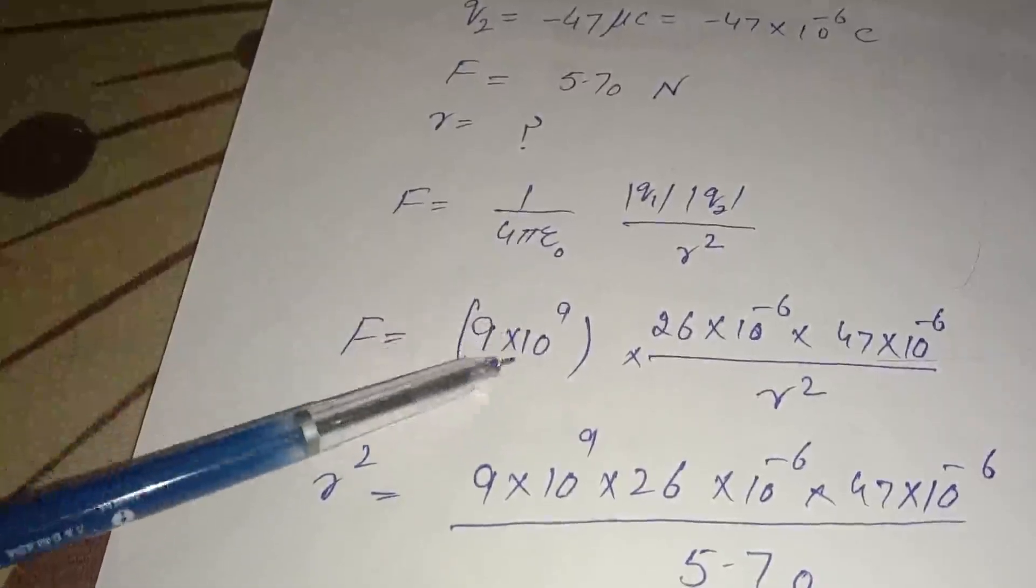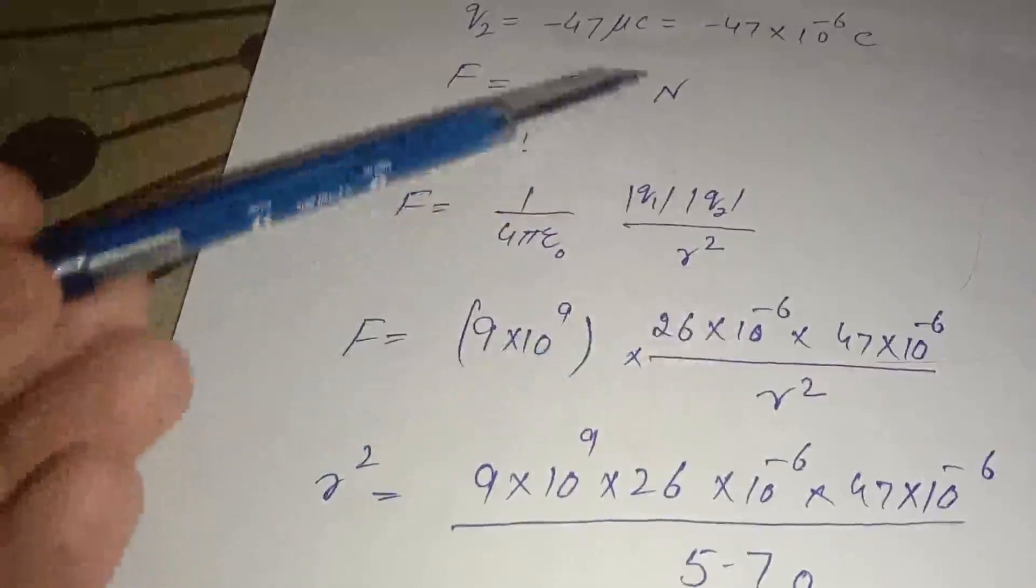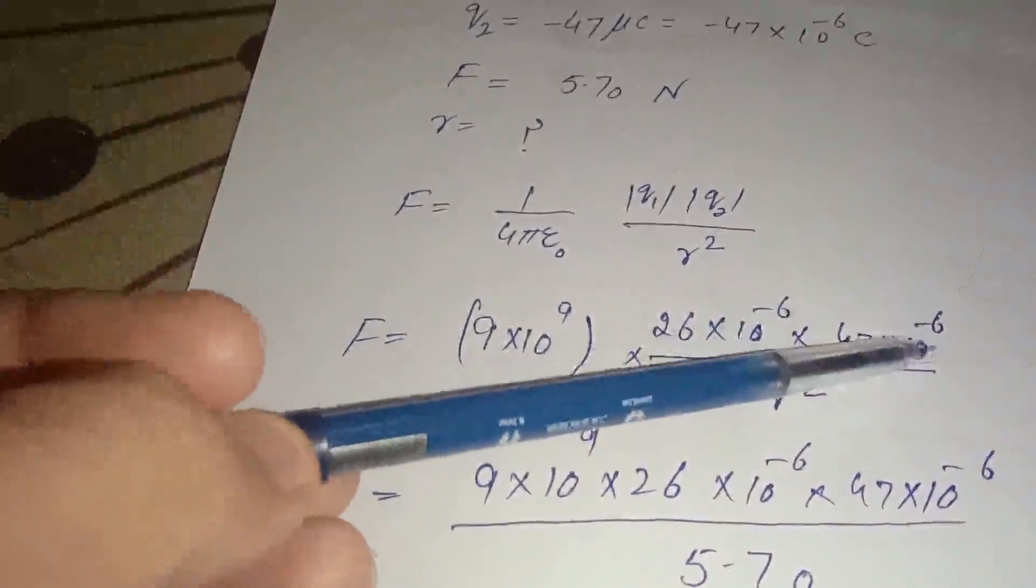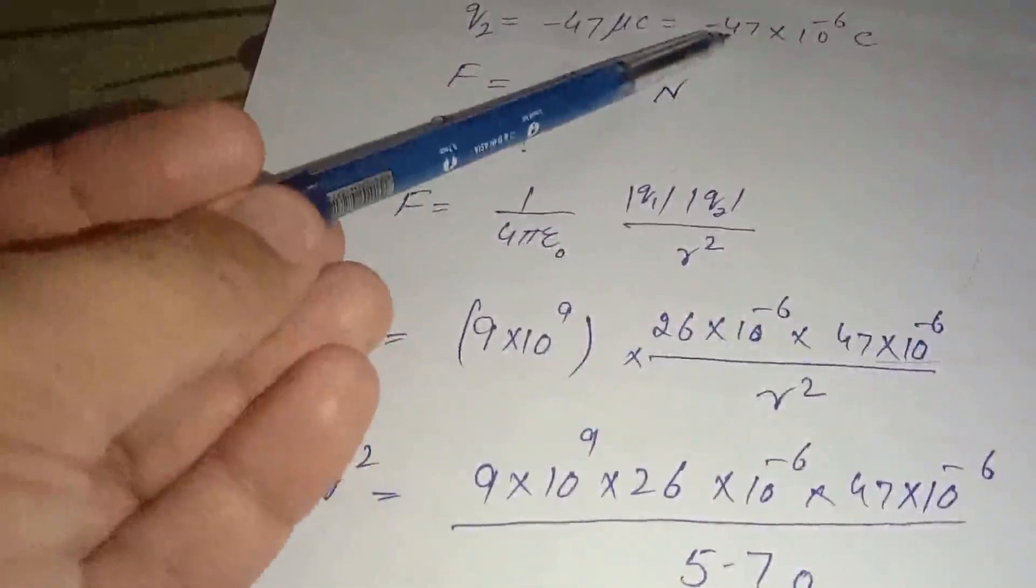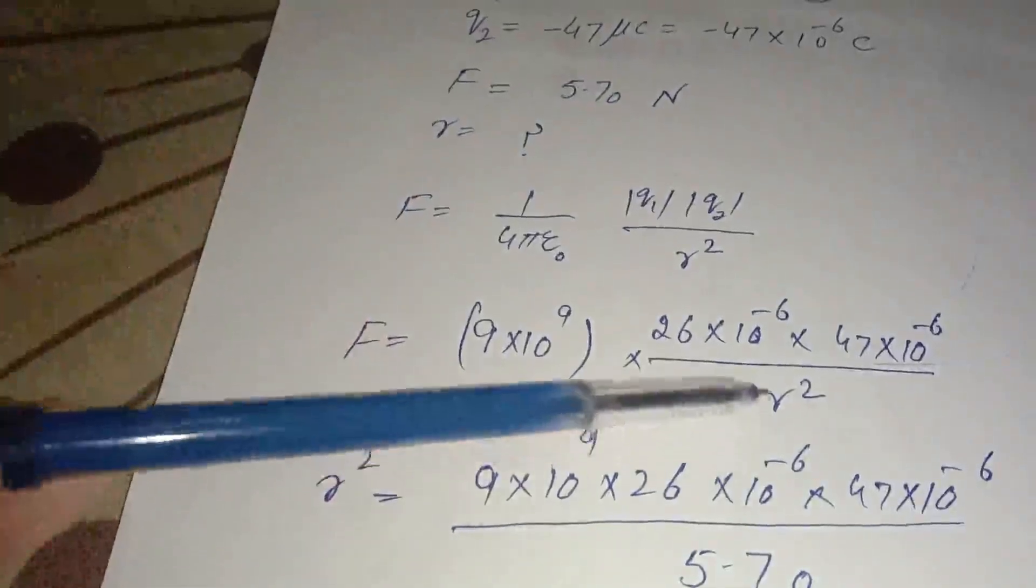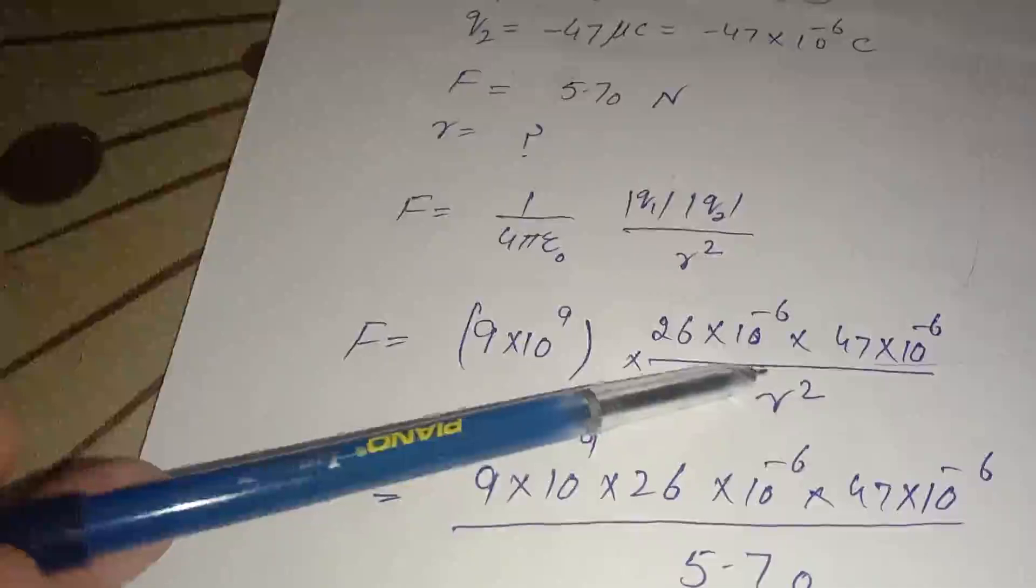I don't put units here; it's understood that they are there. q1 is 26 × 10^-6, and the magnitude of q2 is 47 × 10^-6, because when you take magnitude, there's no need to put a sign here, divided by r². We have to find r², so we make r² the subject of the formula.